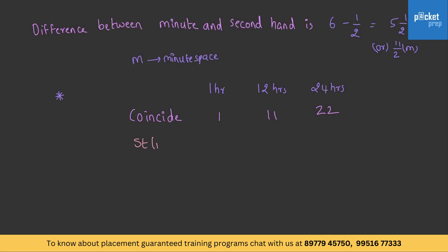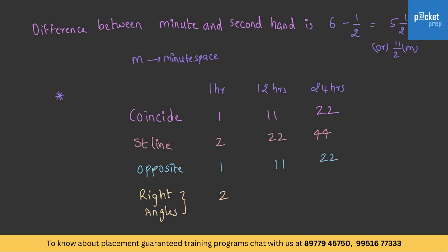In the case of a straight line — when the minute hand and hour hand are in a straight line — it occurs 2 times in an hour, 22 times in 12 hours, and 44 times in 24 hours. When opposite in direction, this occurs 1 time in an hour, 11 times in 12 hours, and 22 times in 24 hours. For right angles, the hands form right angles 2 times in an hour, 22 times in 12 hours, and 44 times in 24 hours.